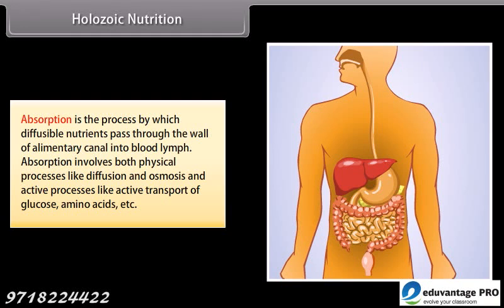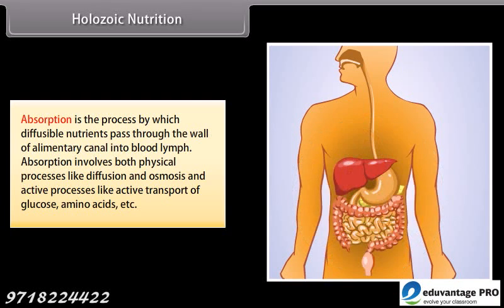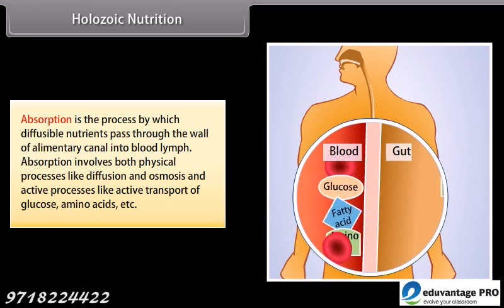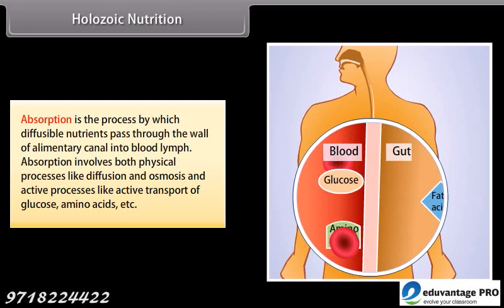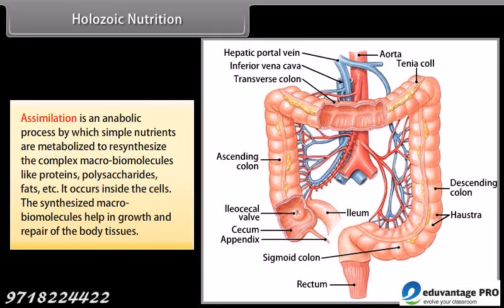Absorption is the process by which diffusible nutrients pass through the wall of the alimentary canal into blood and lymph. Absorption involves both physical processes like diffusion and osmosis, and active processes like active transport of glucose, amino acids, etc. Assimilation is an anabolic process by which simple nutrients are metabolized to resynthesize complex macro-biomolecules like proteins, polysaccharides, fats, etc., and it occurs inside the cells.